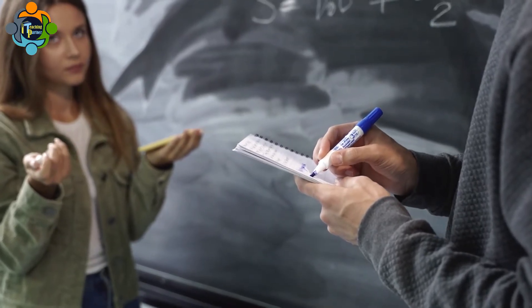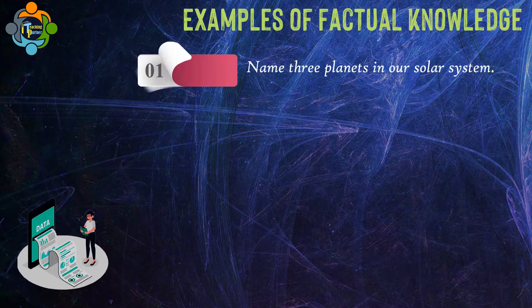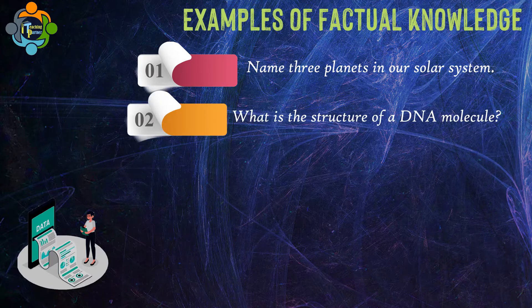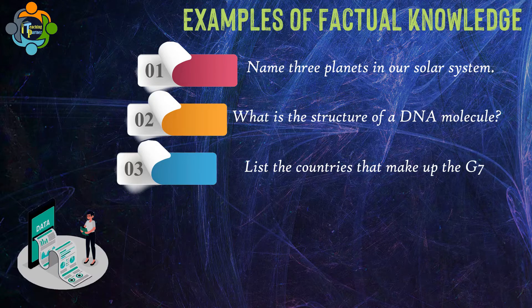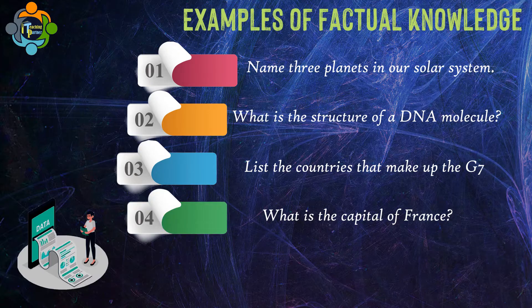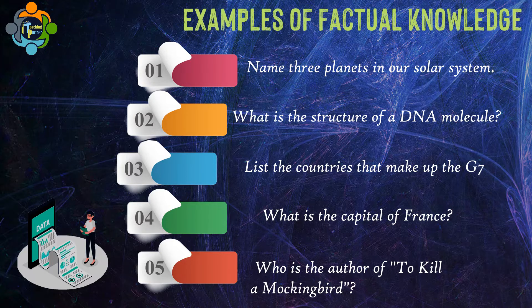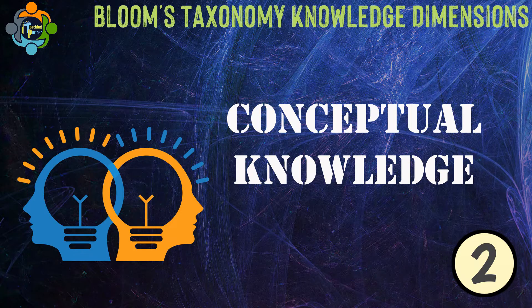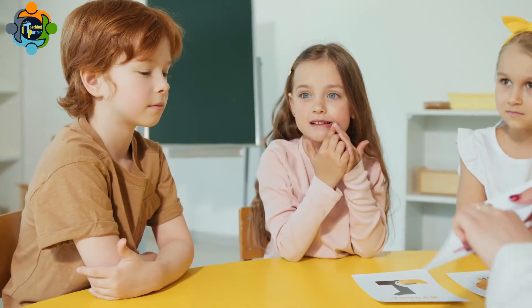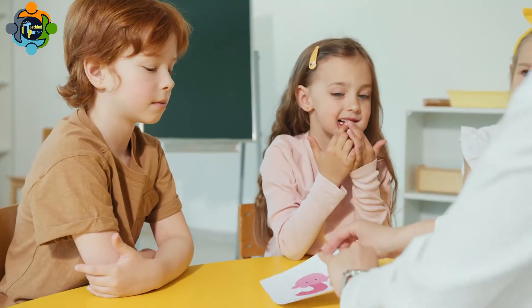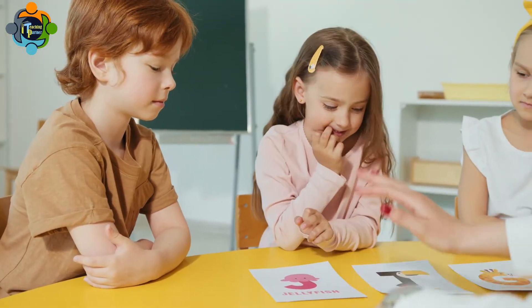By developing factual knowledge, we can pierce through complex concepts with ease, facilitating a comprehensive understanding of any subject matter. Here are some examples: name three planets in our solar system; what is the structure of a DNA molecule; list the countries that make up the G7; what is the capital of France; who is the author of 'To Kill a Mockingbird'?